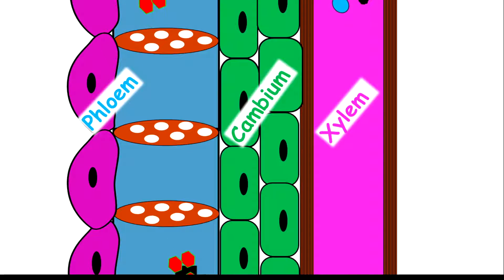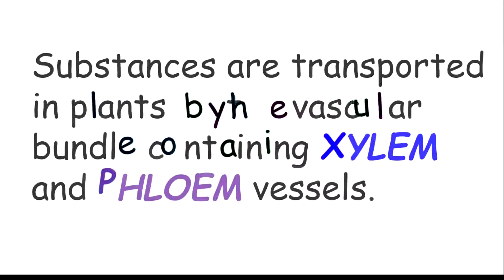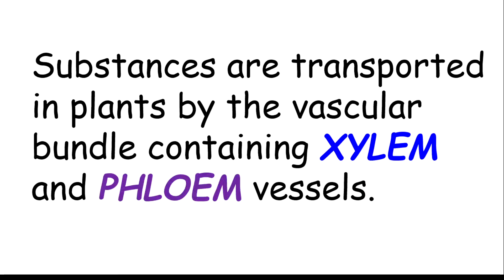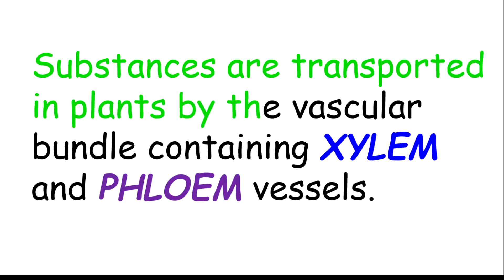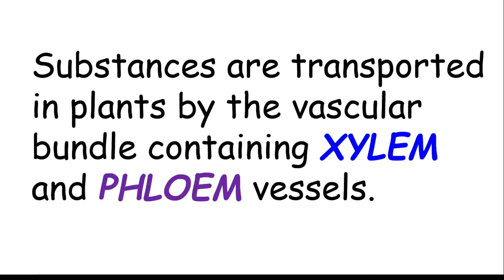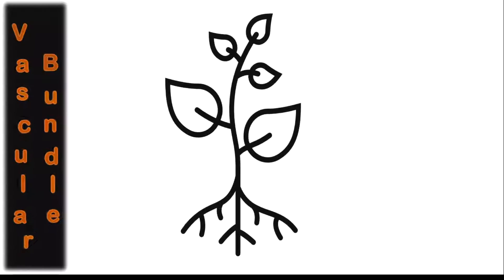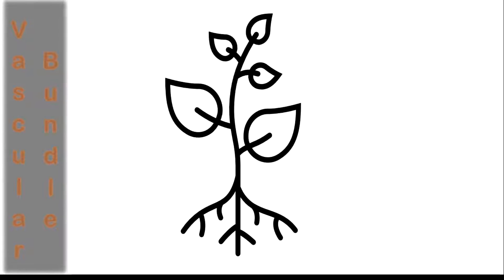Substances are transported in plants by means of the vascular bundle, which contains xylem and phloem vessels. The vascular bundle is located throughout the entire plant, starting from the roots all the way through to the leaves. However, today we're only going to focus on the vascular bundle inside of plant stems.